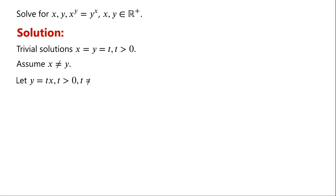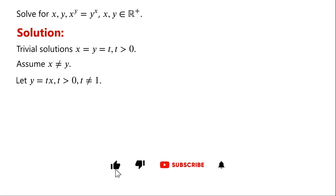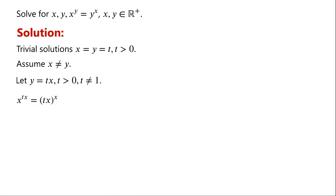Let y equal tx, where t is greater than zero and t does not equal one. Then substituting y equals tx into the original equation, we have x to the power of tx equals tx, all to the power of x.